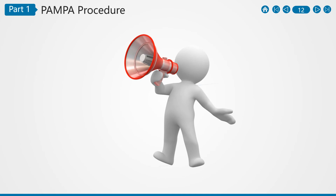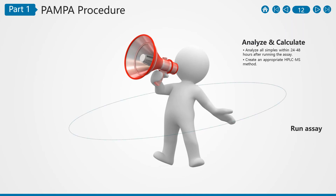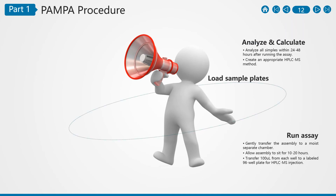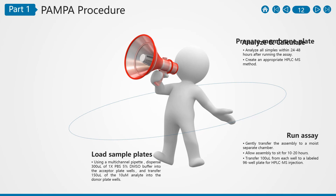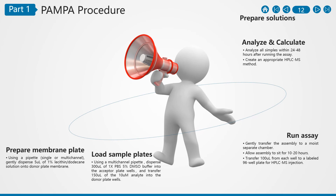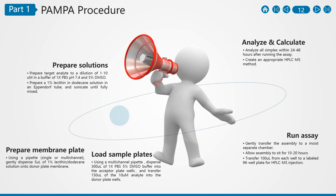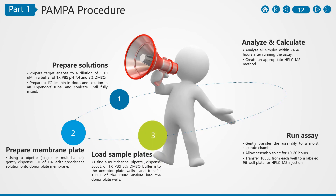Analyze and calculate: transfer 100 µL from each well to a labeled 96-well plate for HPLC-MS injection. Analyze all samples within 24–40 hours after running the assay.